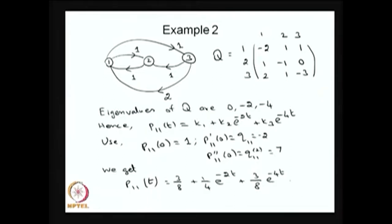The corresponding Q matrix is a 3×3 matrix. You can observe that all the row sums are going to be 0, the diagonal elements are minus the sum of other values in the same row, and other than the diagonal elements the values are greater than or equal to 0.